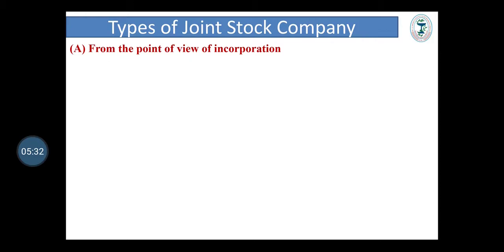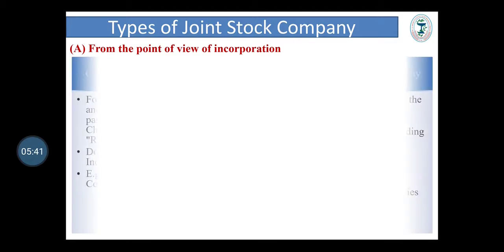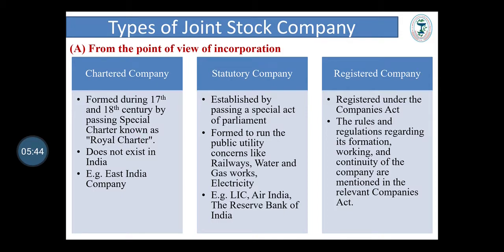Different types of joint stock company: companies may be classified from four different points of view. First, on the basis of incorporation: chartered company, statutory company and registered company. Chartered companies were formed during the 17th and 18th century by passing a special charter known as Royal Charter — that is, an agreement. This type of company does not exist in India. Example: East India Company.